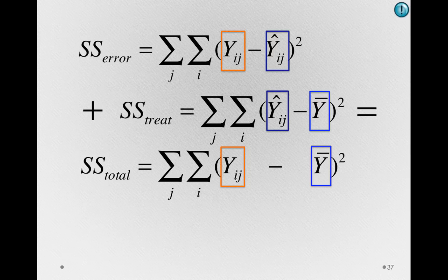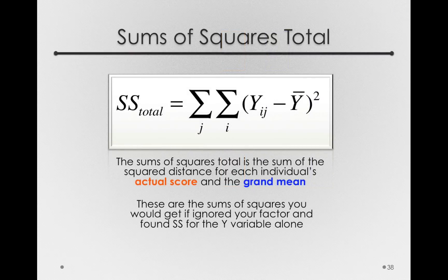What we're really trying to do with this model is partition the total variability in the outcome measure into one part that's simply noise or error, and one part associated with treatment differences — how much those groups differ from the grand mean. The sums of squares total is simply the sums of squares for individuals' actual scores versus the grand mean. These are the sums of squares you would get if you completely ignored your factor structure and just found the sums of squares for Y alone.